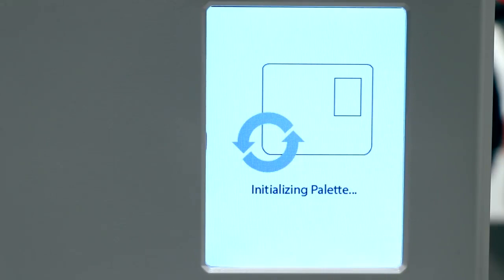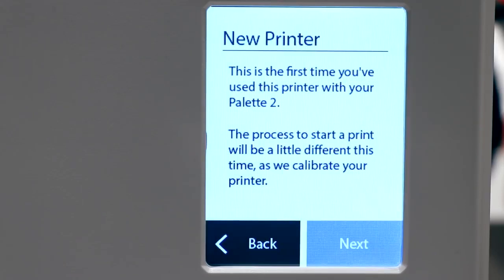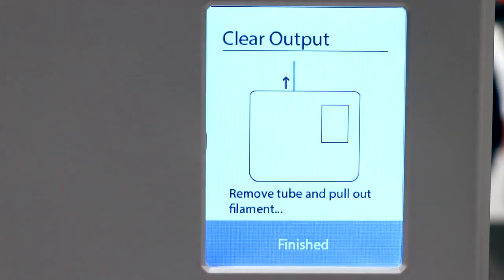Palette 2 will now initialize. Since this is the first time setting up a Palette 2 with this printer, the screen will prompt us for additional information. The screen will also prompt you to remove Palette 2's outgoing tube to remove any excess filament that may remain in the Palette 2 from its last print. Your Palette might not have filament here, but we suggest checking as a precaution.